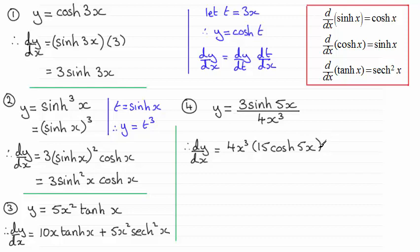I've cut corners here—I haven't actually laid it out fully as the chain rule, but hopefully you can see that. And then with the quotient rule, it's going to be minus, and then we've got the top of the fraction, 3sinh(5x), multiplied by the differential of the bottom here. So differentiating that's going to give me 12x². And then that's all divided by the denominator all squared. So squaring 4x³ is just going to give me 16x⁶.